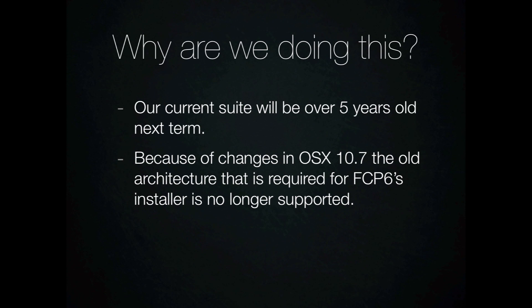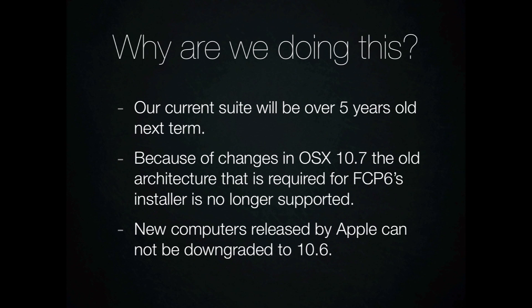Because of the changes in OS 10.7 and in the future with OS 10.8, which is called Mountain Lion, the architecture required for Final Cut Pro 6 to be installed is no longer supported. They switched over a few years ago from a PowerPC architecture to an Intel architecture. Up until our current version, Snow Leopard, there was the ability to use both PowerPC and Intel code. In 10.7 and above, they're just using Intel-based code, and the installer for Final Cut Pro Studio 2 or Final Cut Pro 6 is basically PowerPC code.